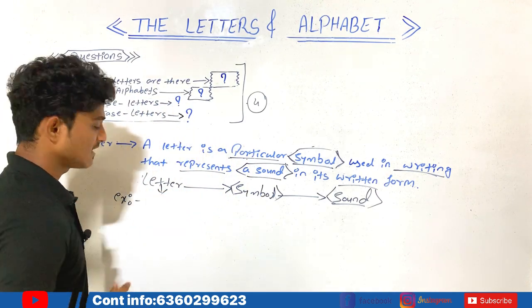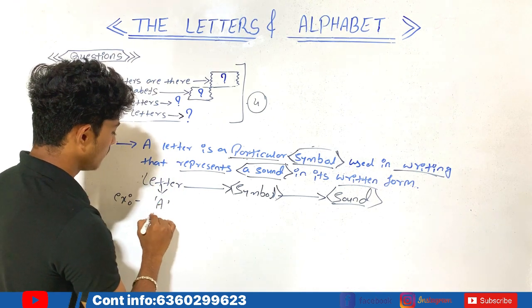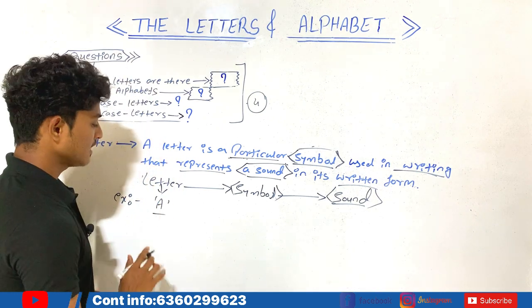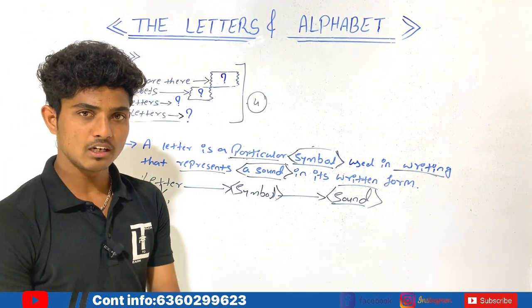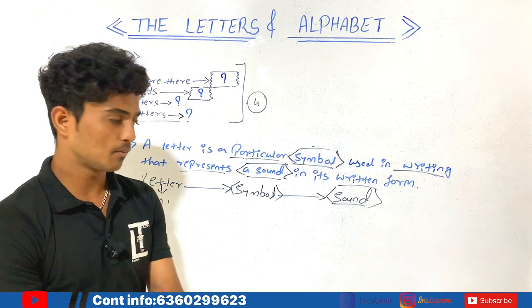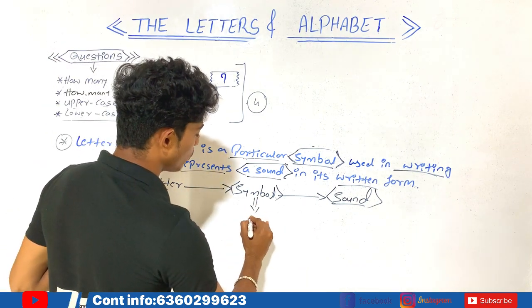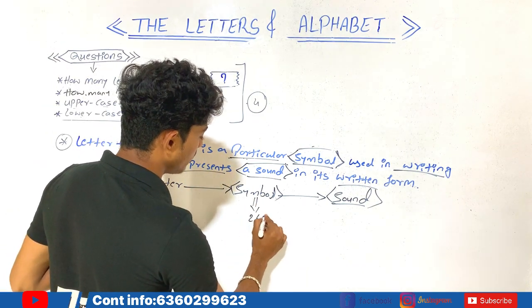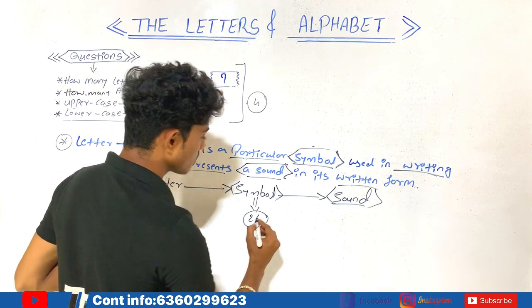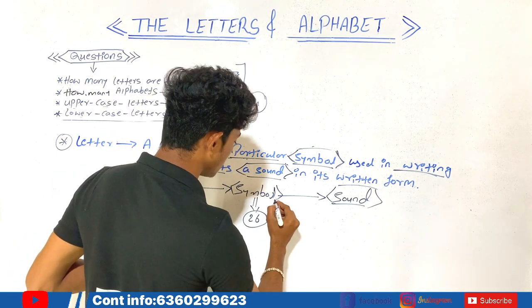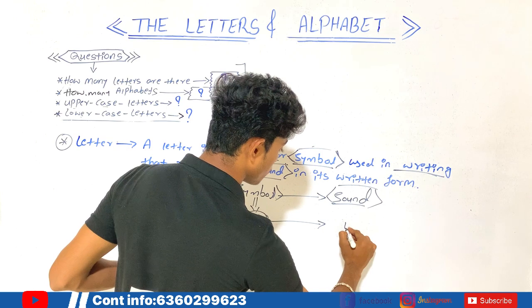Let's take an example. 'A' is nothing but a particular letter — it is a symbol. In the same way, we have a total of 26 symbols, and those 26 symbols produce sound.